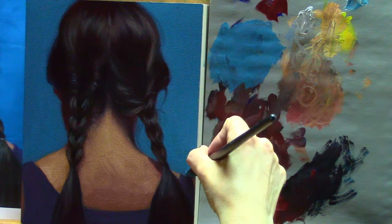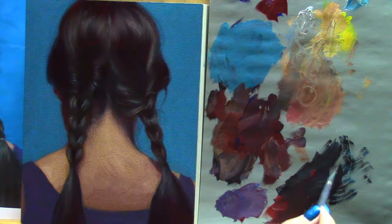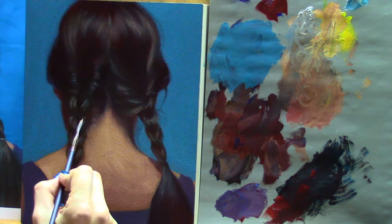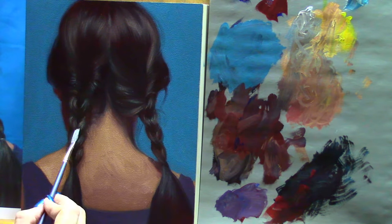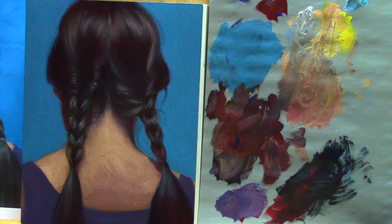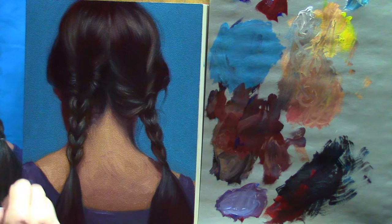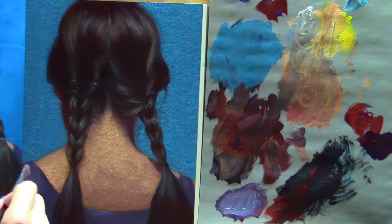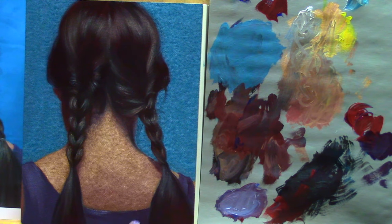So this is also when you're going to put in some stray hairs that go outside of the overall mass of hair on the head. You want to use wispy marks either oil out your painting or work wet into wet so that it kind of melts into the background a little bit.